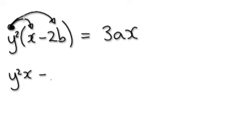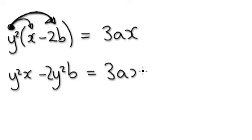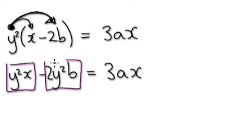Take away. This times this — y squared. So 2y squared b. Equals 3ax. Visualize as this: this block, take away this block, equals this block here.